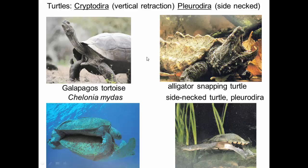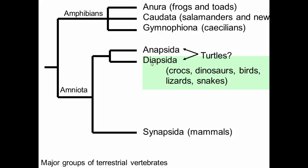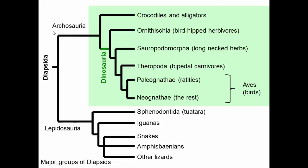Now let's move on to the modern diapsids. Within diapsids, we have two major groups: Archosauria and Lepidosauria. Within Archosauria, we have crocodiles and alligators, then dinosaurs, and then birds.